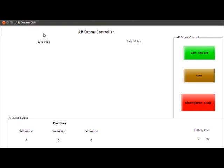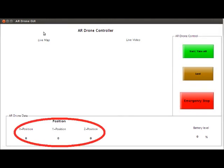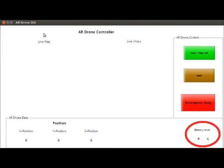You can see to the right a bank of buttons which the user will use to control the drone's actions. Also displayed are the drone's XYZ positions and battery level.